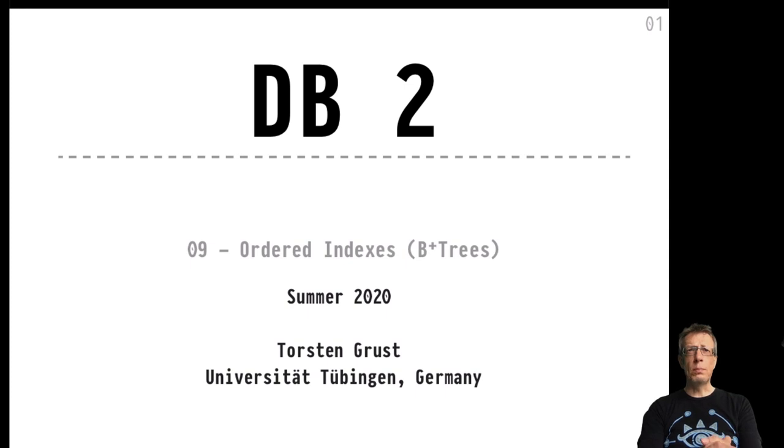Hello and welcome back, it's DB2 time again. Greetings from the emperor's throne room - it looks a bit broken, but the focus is on something else today. In the upcoming videos, it will be a bunch of videos because this is one of the most important chapters in the whole DB2 course. It's about ordered indexes, indexing structures in general in PostgreSQL and also in MongoDB, but the focus will be first on B+ trees.